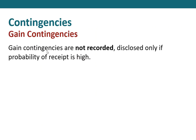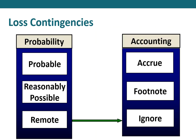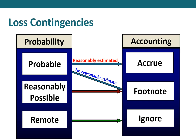To summarize: gain contingencies are not recorded — disclosed only if the probability of receipt is high. For loss contingencies: if it's remote, we ignore it. If it's reasonably possible, we disclose it in the footnotes. If it's probable but we can't come up with a reasonable estimate, we put it in the footnotes. If we can come up with a reasonable estimate, we accrue it. If there's a range of possible losses, we accrue the low end, disclose the range, and particularly include the high end.